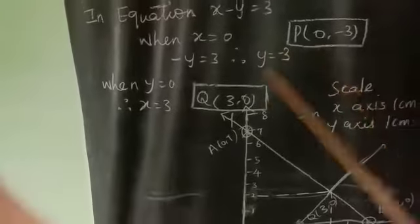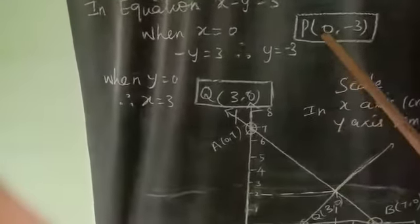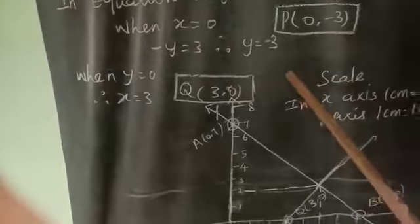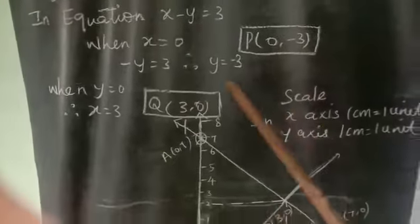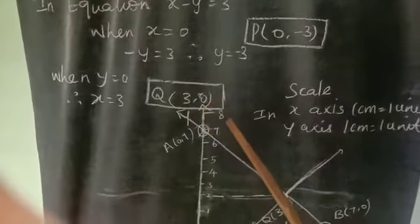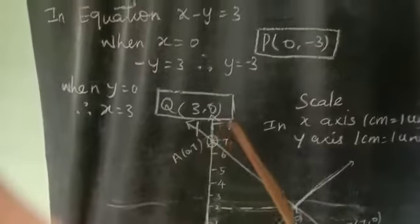Then, second equation points, p, q. Now, we draw the another line. Another line using p, q points. p, 0,3 and q, 3,0.